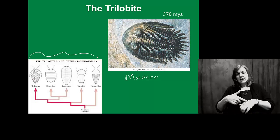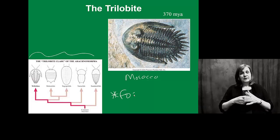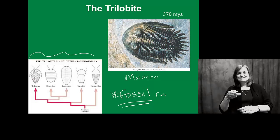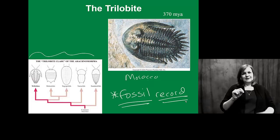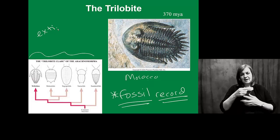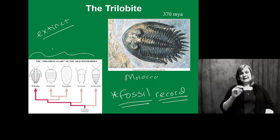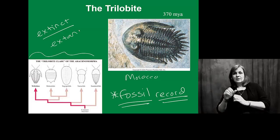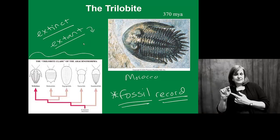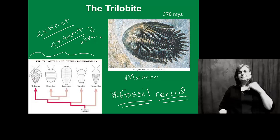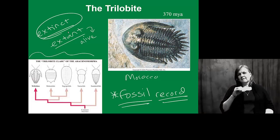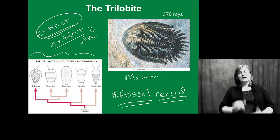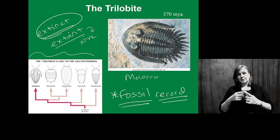We're not going to focus on this in great depth, but the trilobite is a key example of a fossil record organism. There are no living species of trilobites — when we talk about trilobites, we talk about them as being extinct. We can also talk about extant species: an extant species is one that is still alive. Trilobites are all extinct, so we only have the fossil record to work with. We can look at how they've changed simply by examining that fossil record.